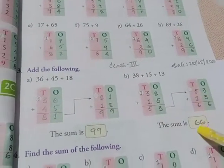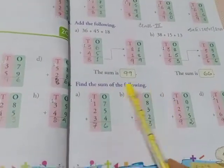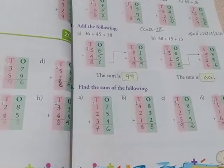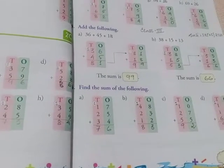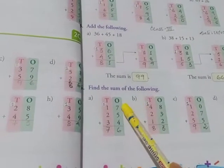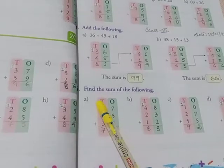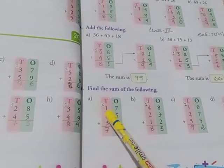The sum is 66. Next, find the sum of the following: 17 plus 25 plus 34. 7 plus 5 equals 12, 12 plus 4 equals 16, write 6 and carry 1. 1 plus 1 equals 2, 2 plus 2 equals 4, 4 plus 3 equals 7, so 76.